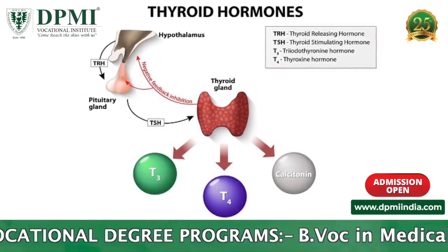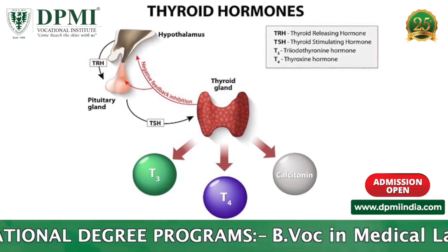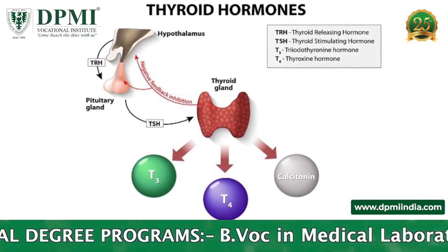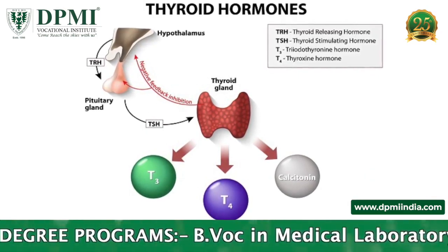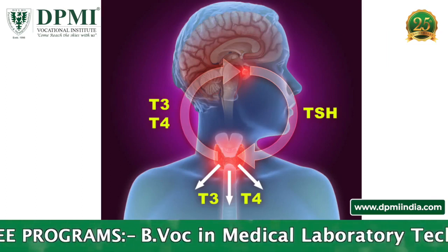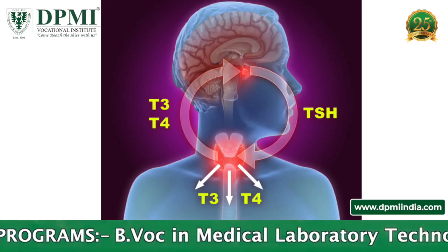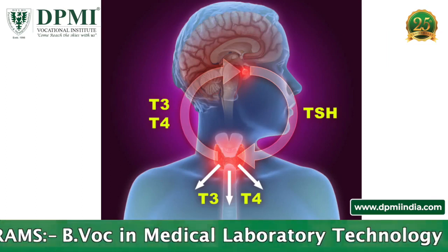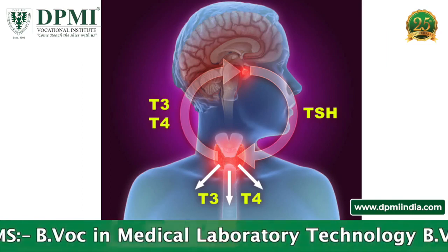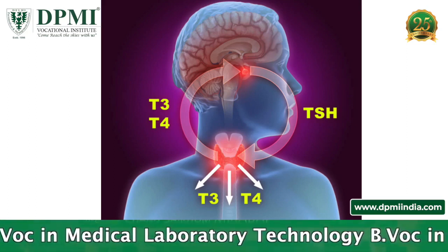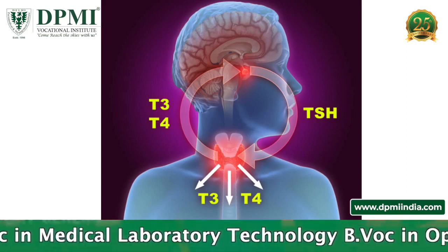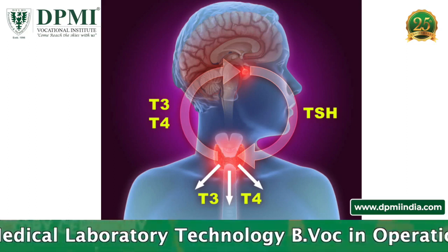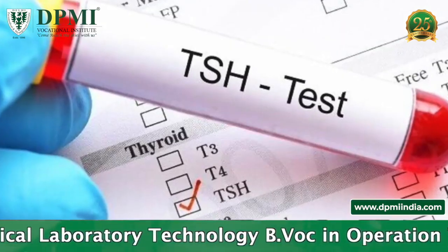The hormones secreted by the thyroid gland are thyroxine, also called T4, and triiodothyronine, or T3. The amount of T4 produced by the thyroid gland is controlled by another hormone secreted by the pituitary gland, called thyroid stimulating hormone, or TSH.